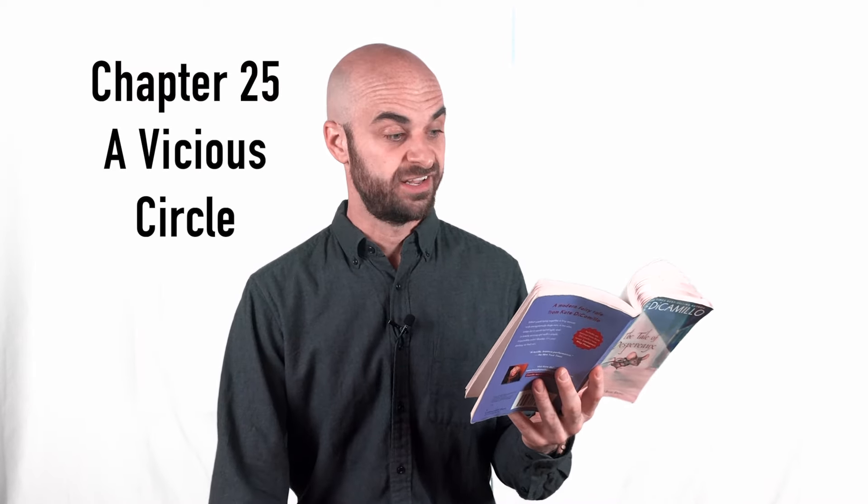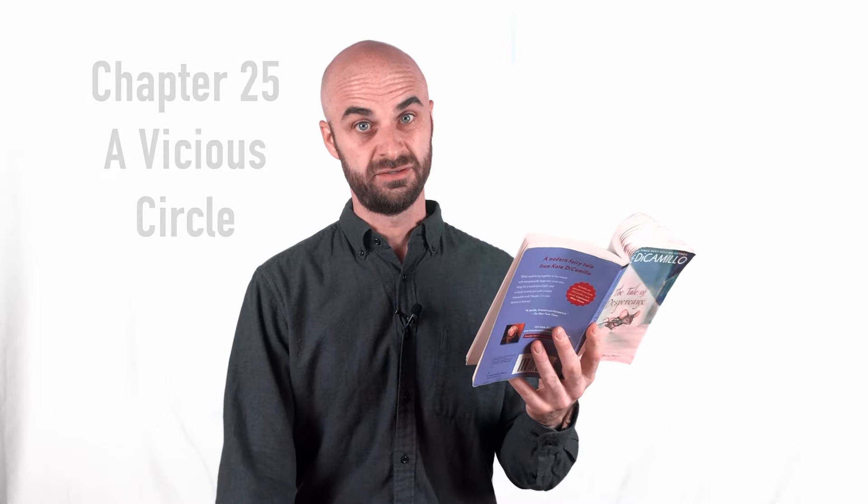Chapter 25 is called A Vicious Circle. Mig-ery so called the man who purchased her Uncle, as he said she must.